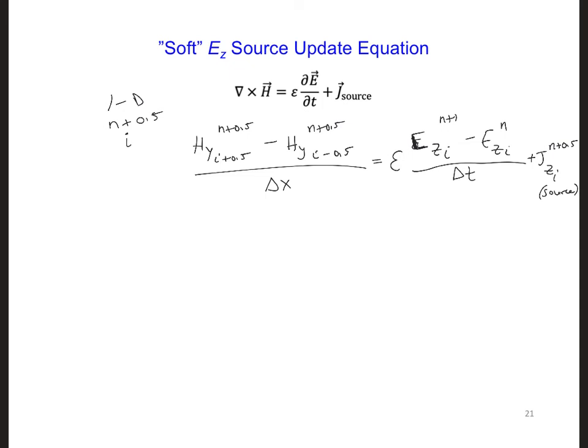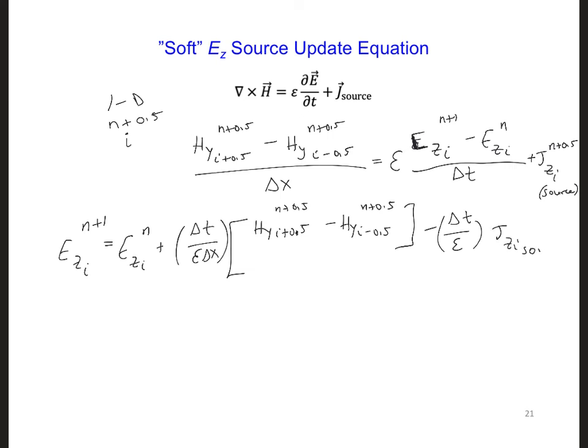Solving for the future value of EZ at N plus 1, location I, we get: EZ at N plus 1, I, equals EZ at I plus delta T over epsilon delta X times the H terms, minus delta T over epsilon times JZ at I source, N plus 0.5.